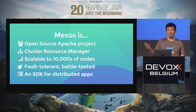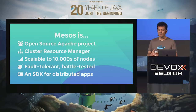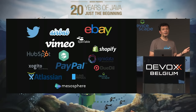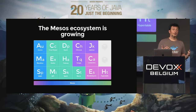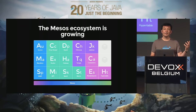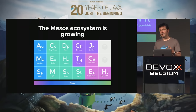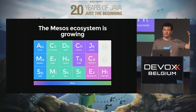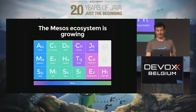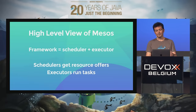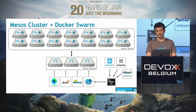Now let's talk briefly about Mesos. It's an Apache project, very mature, used in a lot of companies. It started at Twitter and is used in lots of large consumer companies with very large clusters, and now it's getting into the enterprise. They have a whole ecosystem of frameworks — the Swarm framework is only one of them. There's Marathon and Kronos. Yesterday Yelp released a platform as a service they built internally as open source, called Paasta, based on Mesos plus Marathon and Kronos.